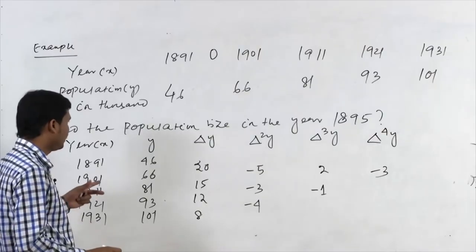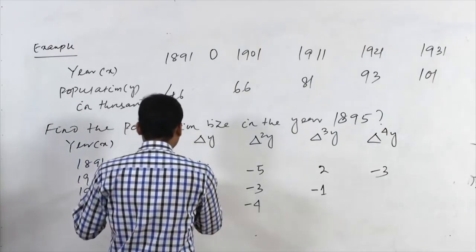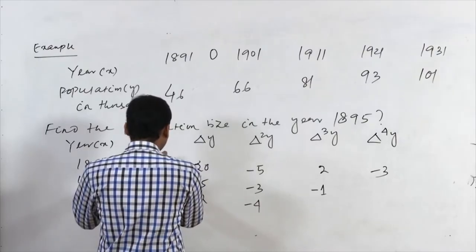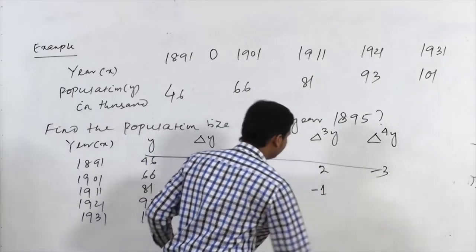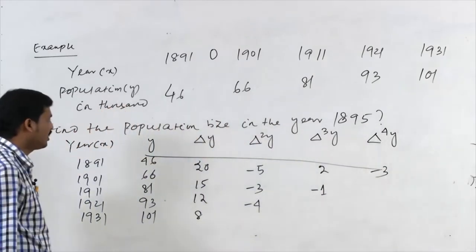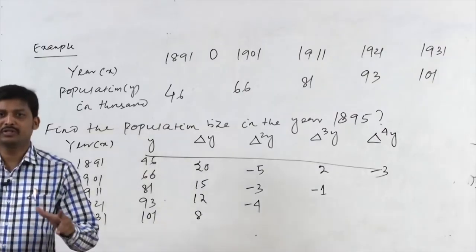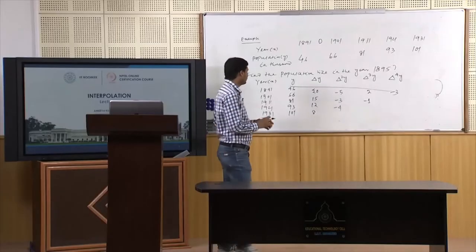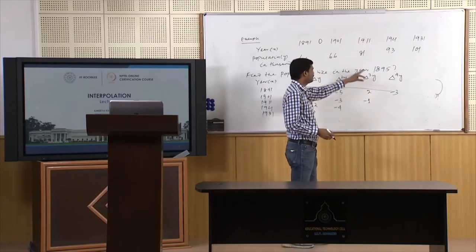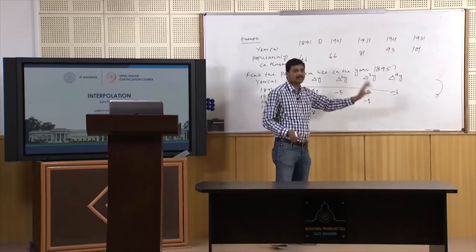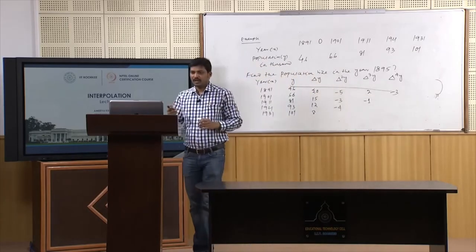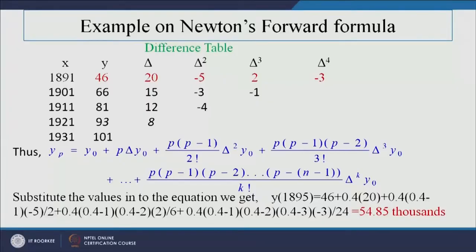Since the value we want to find approaches the beginning of the table, we use Newton's forward difference formula and consider the upper part of the tabular values — marked in red in the slides — for the computation.